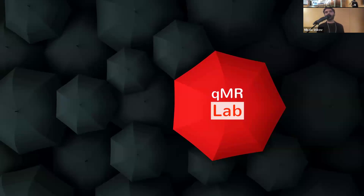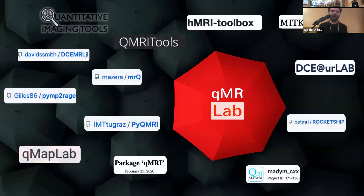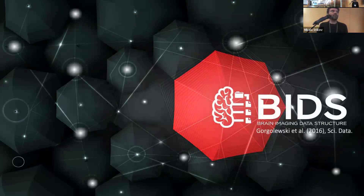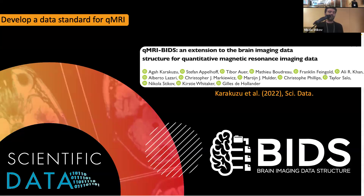Our vision was quantitative MRI under one umbrella — this happened in 2016. In the meantime, lots of other tools popped up from other groups, which is great because we still think there's a way to make all of these interoperable. One way to do it is by developing data standards. There is the BIDS data standard, which started with Russ Poldrack, Chris Gorgolewski and their group. Recently it has expanded into different extension proposals, including the very first extension proposal for quantitative MRI, led by Aga Karakuzu in my lab.